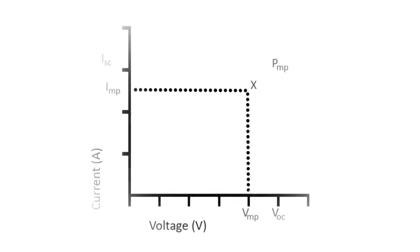On an IV curve, what we show is up on the vertical axis there is the current, measured in amps of course, and on the horizontal axis we've got the voltage.